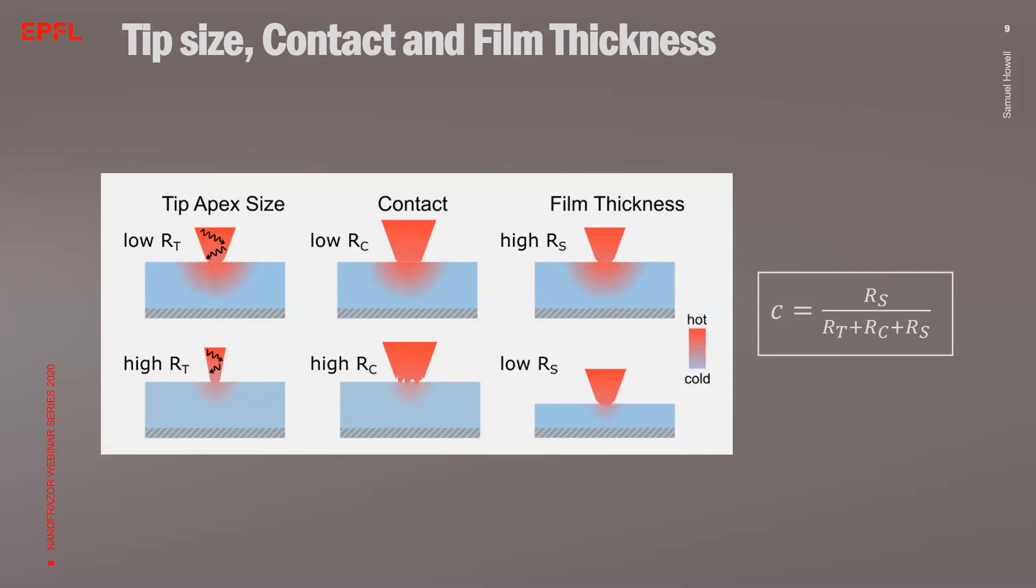Calculating the contact resistance is further complicated because during patterning it can change due to tip wear and contamination. The film thickness is important for the thermal isolation in order to reach reasonable temperatures of a few hundred degrees as discussed before. As the thickness of the film decreases, the influence of the thermal conductivity of the substrate becomes more important. Typically, a couple of tens of nanometers of a polymer film on a silicon wafer are already enough to reach sufficiently high temperatures at the interface.